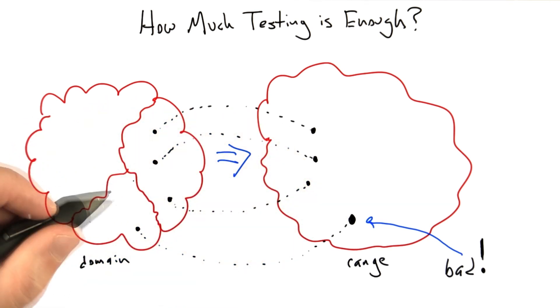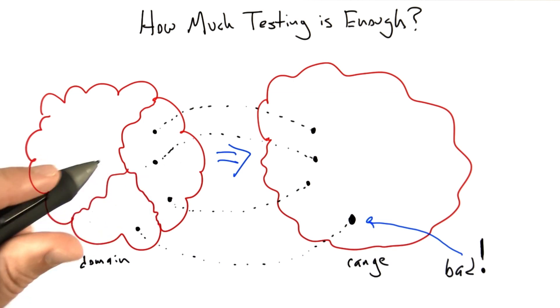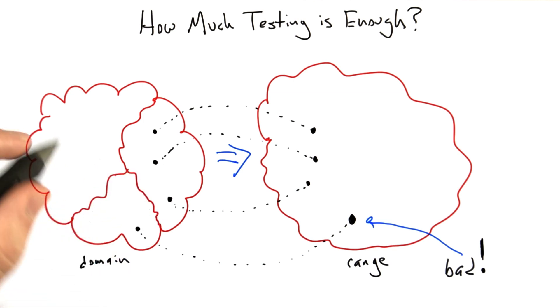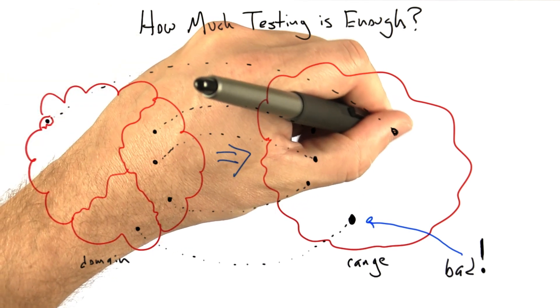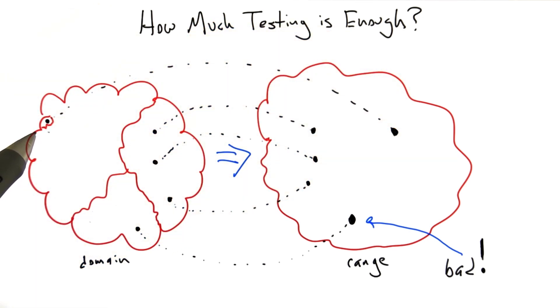To take an even more extreme example, let's say that we're testing some software that somebody has inserted a back door in. Well, in that case, there's going to be an absolutely infinitesimal part of the input domain, maybe way over here, that triggers the back door. Because remember, if you're putting a back door in code, you don't want it triggered accidentally. And that's going to lead to something extremely bad happening over here. We didn't test the inputs triggering the back door because we just didn't know it was there.